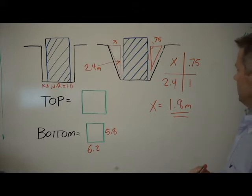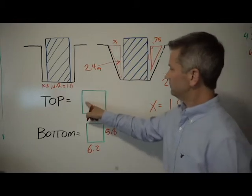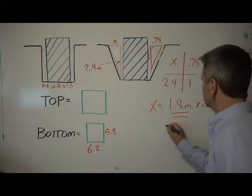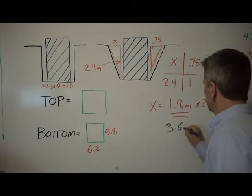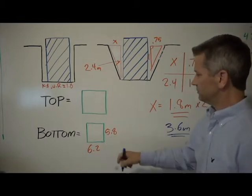x equals 1.8 meters. Now we can take that 1.8 meters and add that to each side of our building. So the easiest way to do that is to simply double it. We'll times that by 2 and then that will give us 3.6 meters that we will add to each of these two measurements.